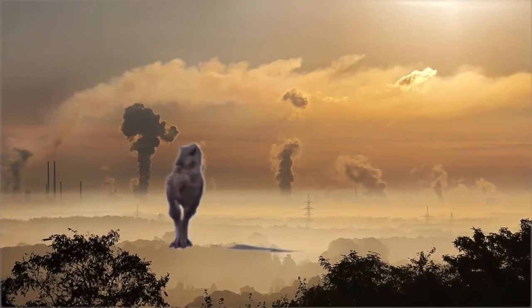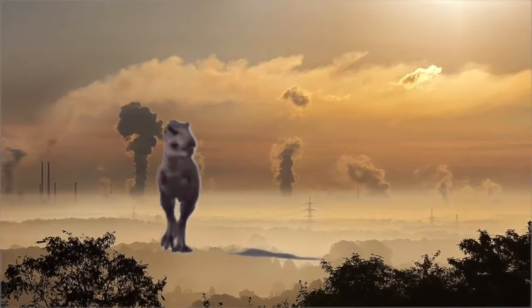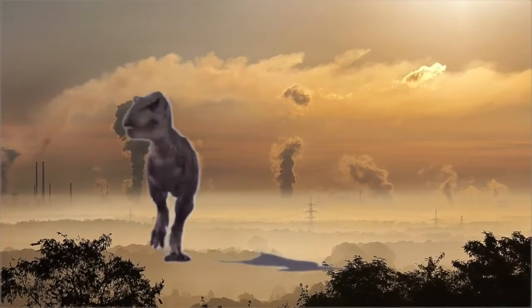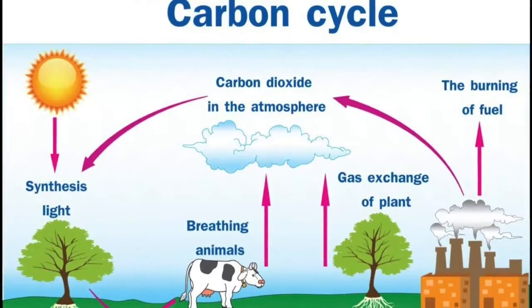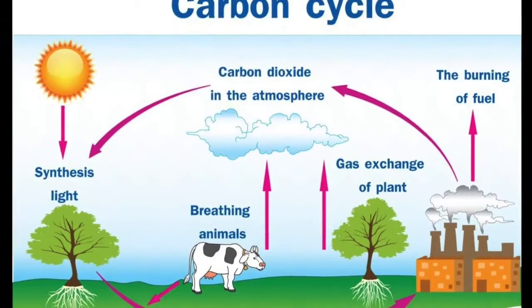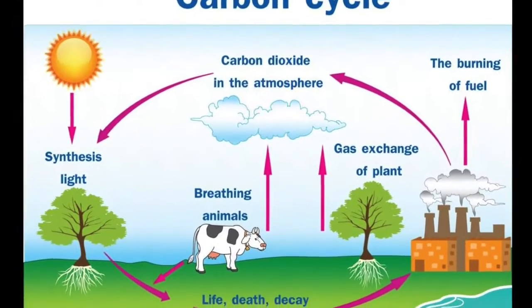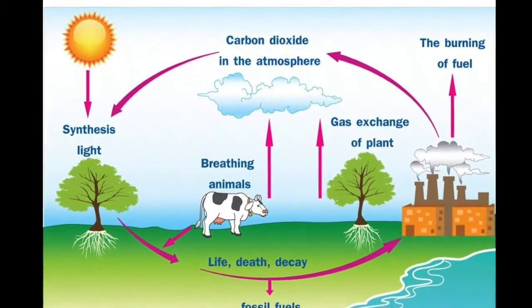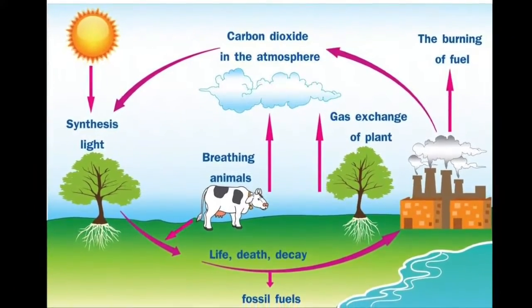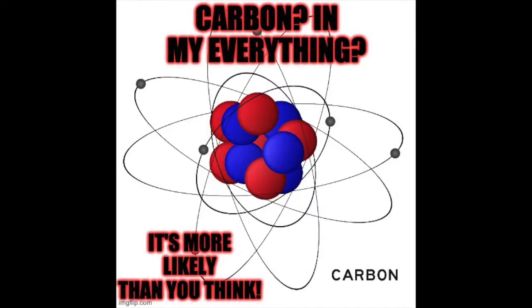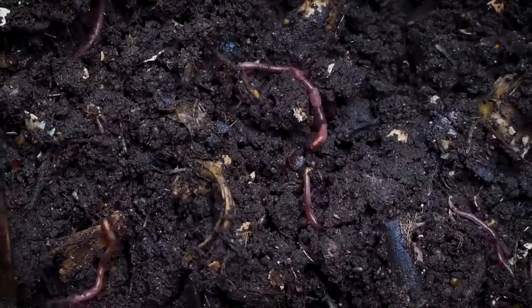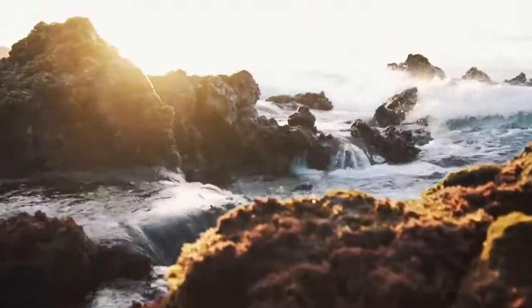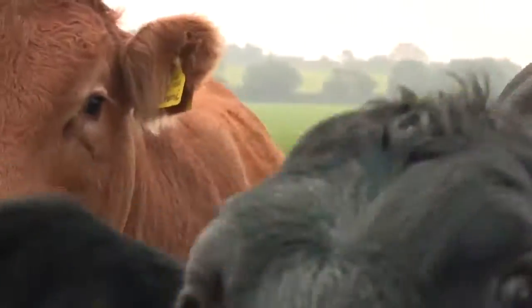Carbon in my dinosaurs — it's more likely than you think. The carbon cycle is vital to our everyday life. All living creatures contain carbon, and so do some inorganic materials. Carbon is the fourth most abundant element in our universe, and you can find it in rocks, air, plants, animals, soil, fossil fuels, and the ocean.